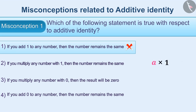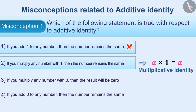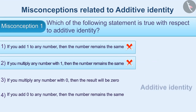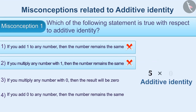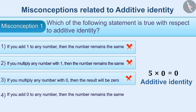If you multiply any number by 1, then the number remains the same — therefore, option 2 is not the correct answer for the given question. Sometimes option 3, which states that if you multiply any number by 0 then the result will be 0, is considered the correct answer with respect to additive identity. But this is also a misunderstanding.